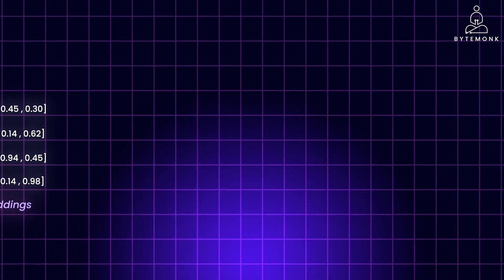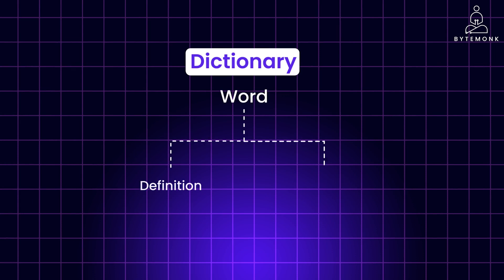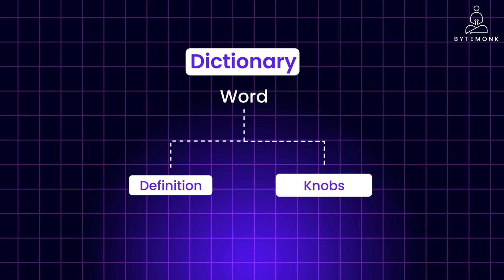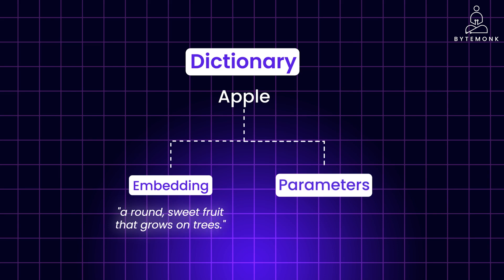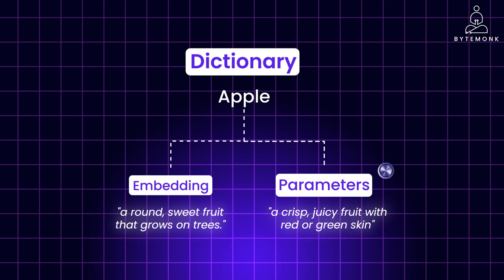Parameters act as tuning knobs, adjusting the model's internal workings to create meaningful embeddings. By analyzing vast amounts of text data and adjusting these parameters, the model learns to map words to meaningful embeddings, capturing the intricate relationships and context within language. Let's understand this with a simplified example. Imagine you are writing a dictionary. Each word entry has two parts: a definition and knobs. The definition represents the encoded meaning of the word — like the embedding in an LLM. Knobs are adjustable dials that control how the definition is written; these are like the parameters in an LLM. For instance, you start with the raw word 'apple.' The embedding captures its meaning: a round, sweet fruit that grows on trees. The parameters, or knobs, adjust how this meaning is presented — making it more formal, adding details about specific varieties, or even injecting humor.